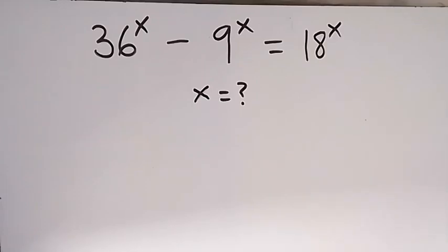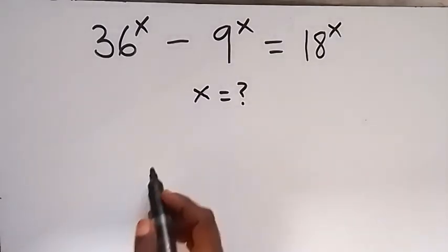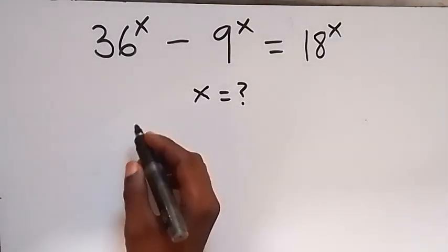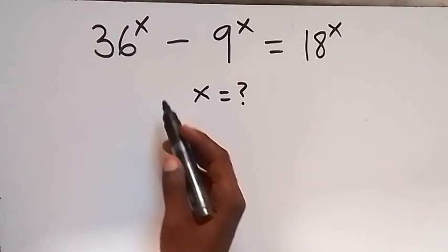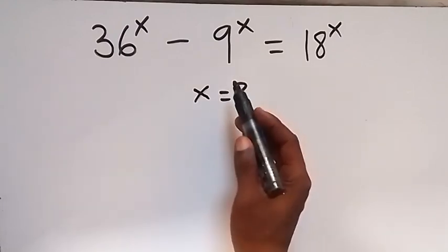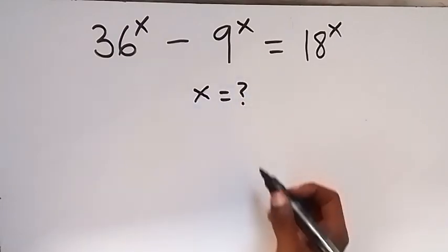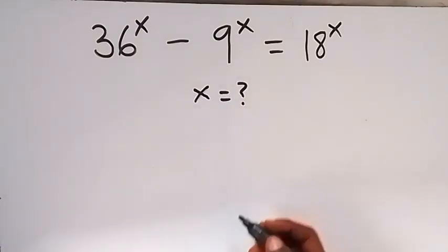Hello, you are welcome. How to find the value of x in this non-isoline pair problem. From here, we have 36 raised to power x minus 9 raised to power x equals to 18 raised to power x.